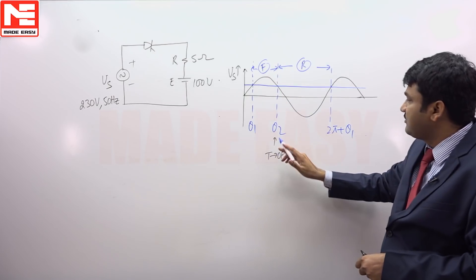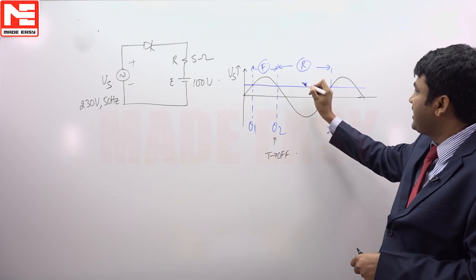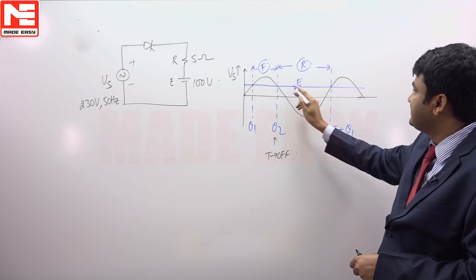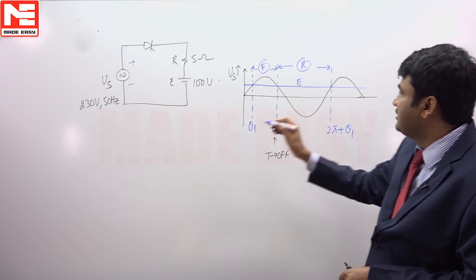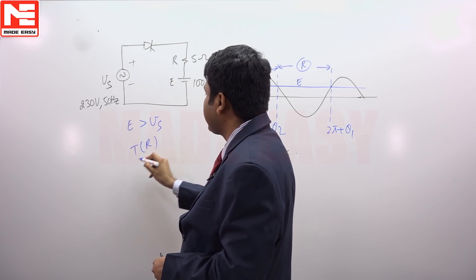Then in the next cycle from theta 2 up to 2 pi plus theta 1, from here to here, the battery voltage E volts, this E is dominating the supply. So wherever E is more than the supply voltage, thyristor is reverse biased.